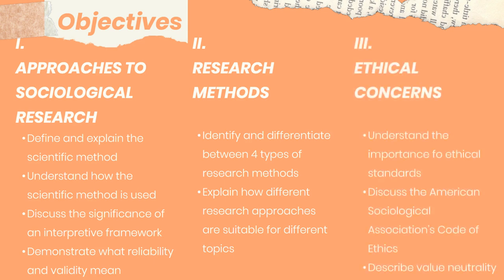In the third part we'll look at some of the ethical issues that researchers, including sociologists, need to be aware of and ensure their research adheres to. We'll discuss some of the ethical guidelines that the ASA, the American Sociological Association, has adopted for all sociologists, particularly those in the U.S. And last but not least, we'll describe what value neutrality means and why it's so important for scholars to maintain value neutrality in their research.